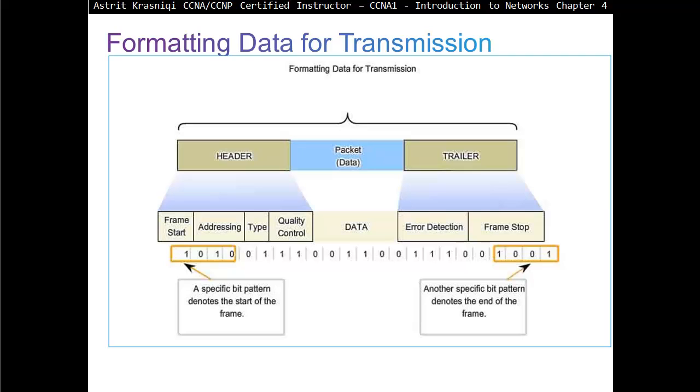This is the Data Link Layer formatting data for transmission. From layer 7 up to layer 3, as far as the Data Link Layer is concerned, it's just data. The Data Link Layer adds its own header and trailer as well.